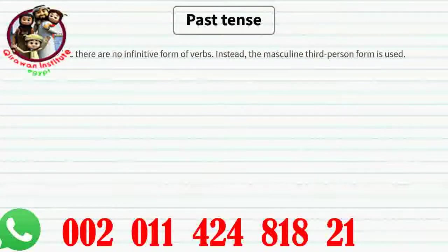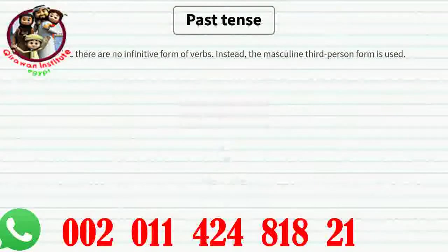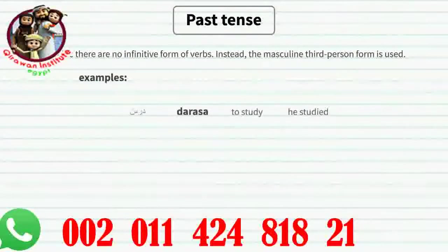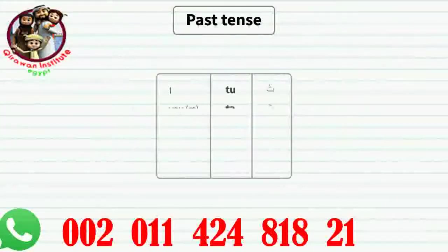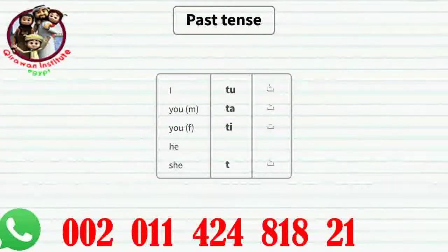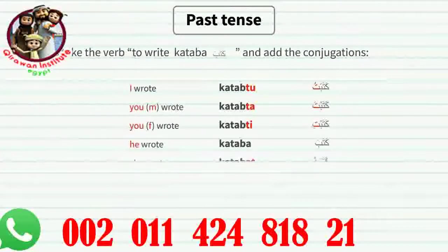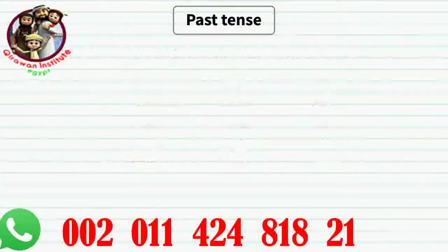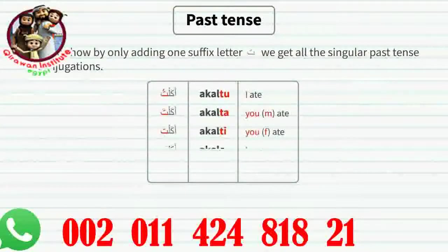In Arabic, there are no infinitive verbs. Instead, the masculine third person form is used. For example, kataba means 'to write' but literally means 'he wrote.' So verbs in infinitive form are actually in masculine third person form. Examples: darasa, fataha, amala. We will focus on singular conjugation. Past tense singular: katabtu, katabta, katabti, kataba, katabat. Notice how by only adding one suffix, we get all the singular past tense conjugations. Another example: akeltu, akelta, akelti, akel, akelat.